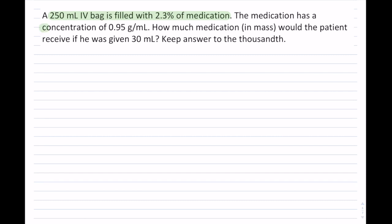The medication has a concentration of 0.95 grams per milliliter. So that's also important here. How much medication in mass would the patient receive if he was given 30 milliliters? And we want to keep this answer to the thousandth.